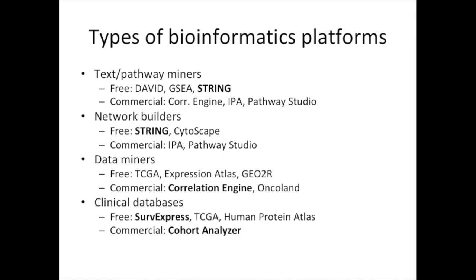All of these genes have text associated with them — Gene A is in this pathway, it's in this part of the cell, it has this protein domain on it. These texts are put there by experts; it's text that we assign to these genes. What we're looking for with these text miners is: given a big list of genes, are there any pieces of text that are overrepresented in that list? And given that information, maybe that particular biological group is playing a role in my system.